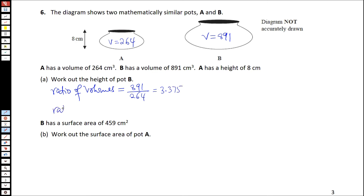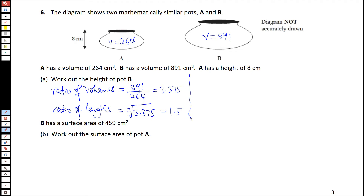From there, we can find the ratio of the lengths. Remember, you're working backwards here. If you have the ratio of lengths and want to find the ratio of volumes, you cube. But if you have the ratio of volumes and want to find the ratio of lengths, you find the cube root. So, the cube root of 3.375 equals 1.5, which means the height of B is 1.5 times the height of A.